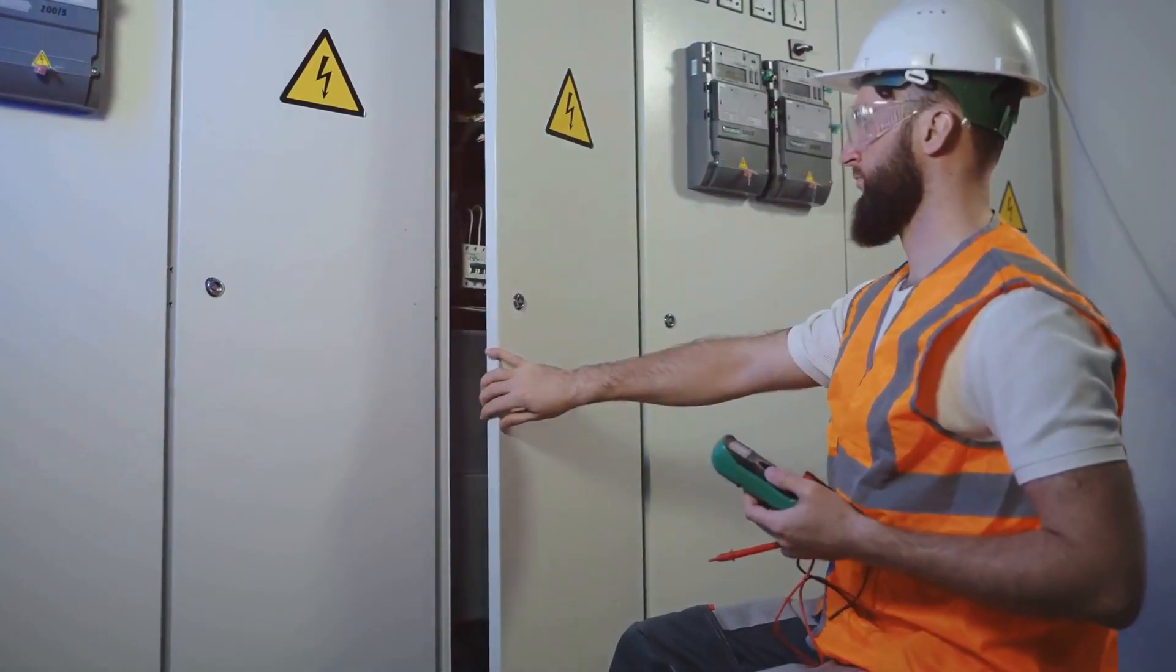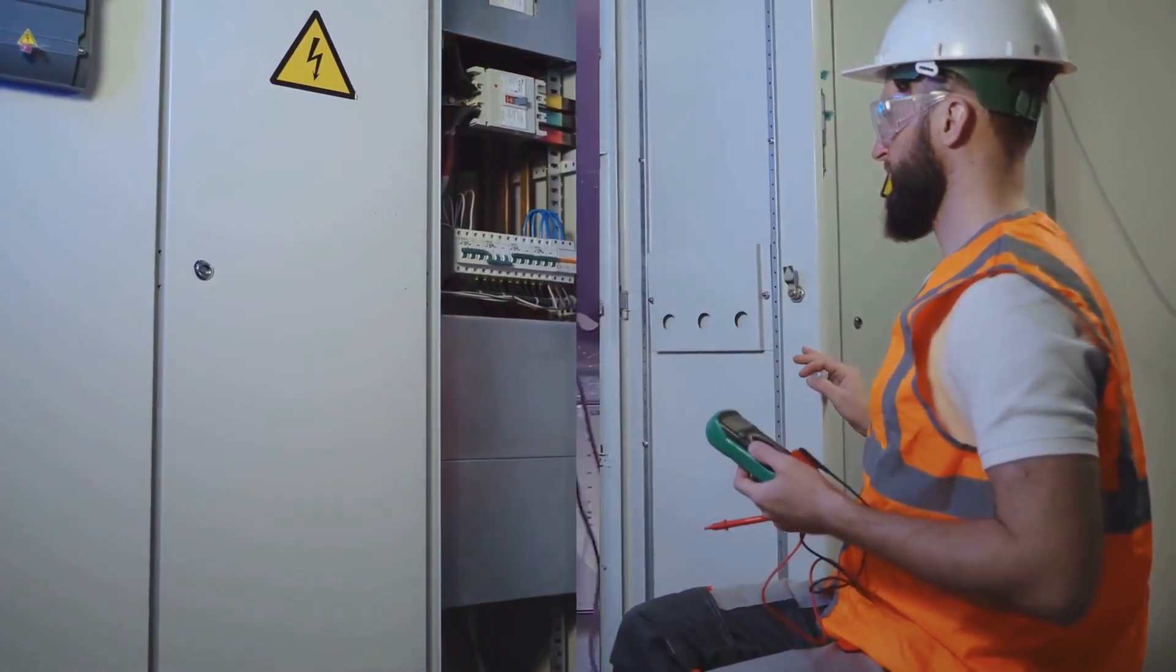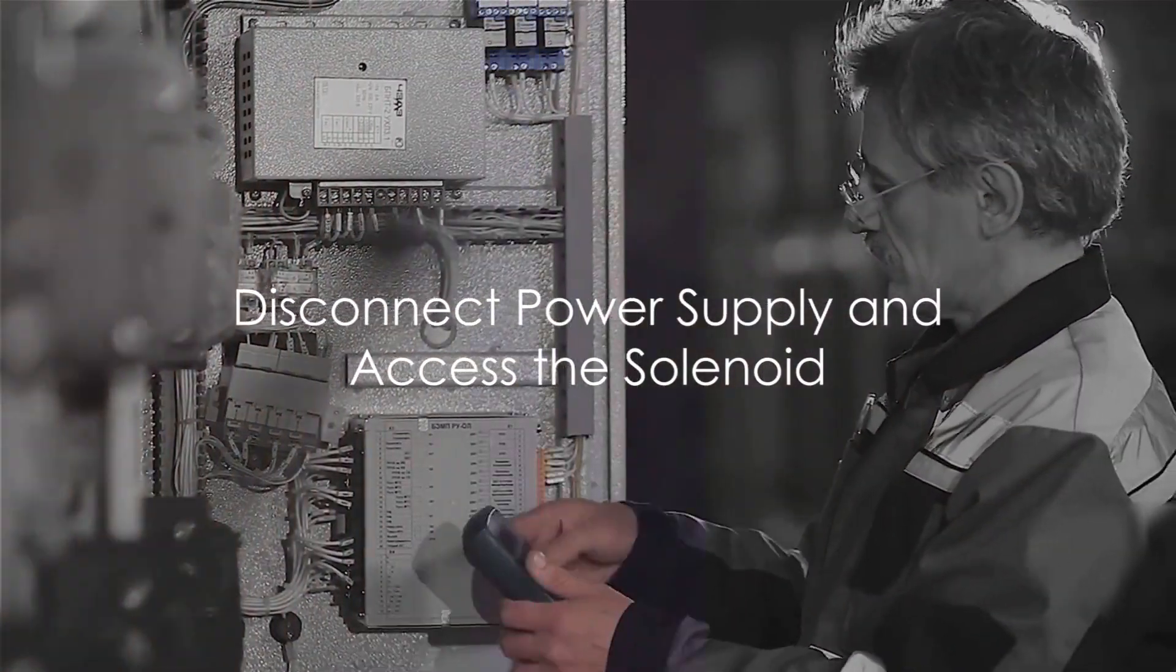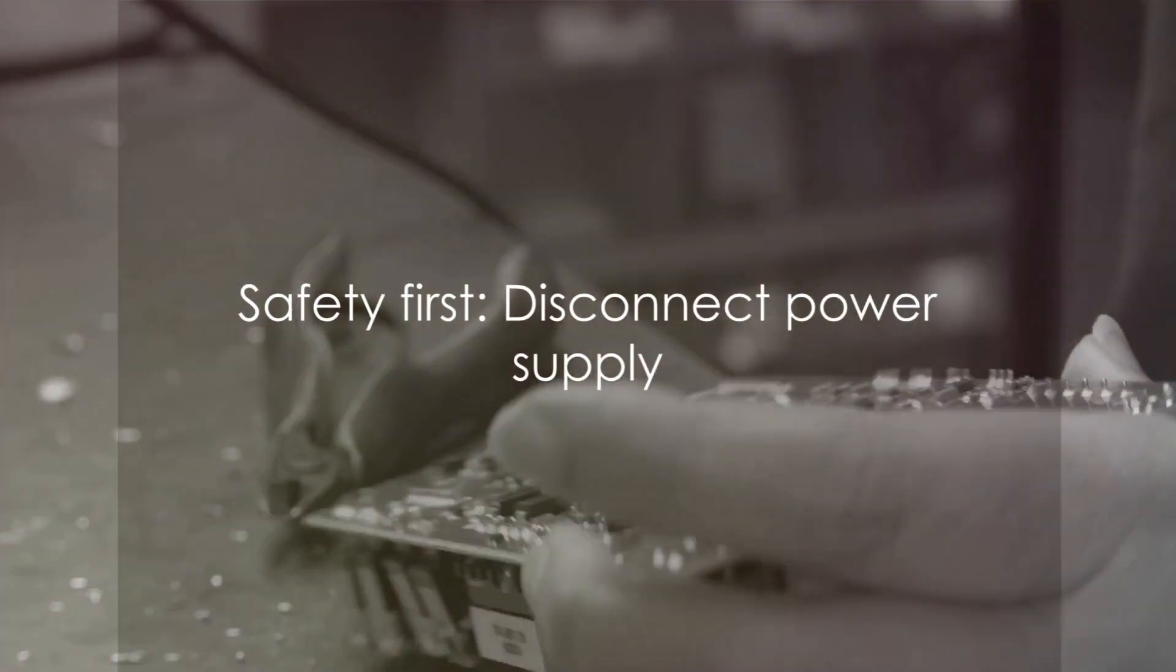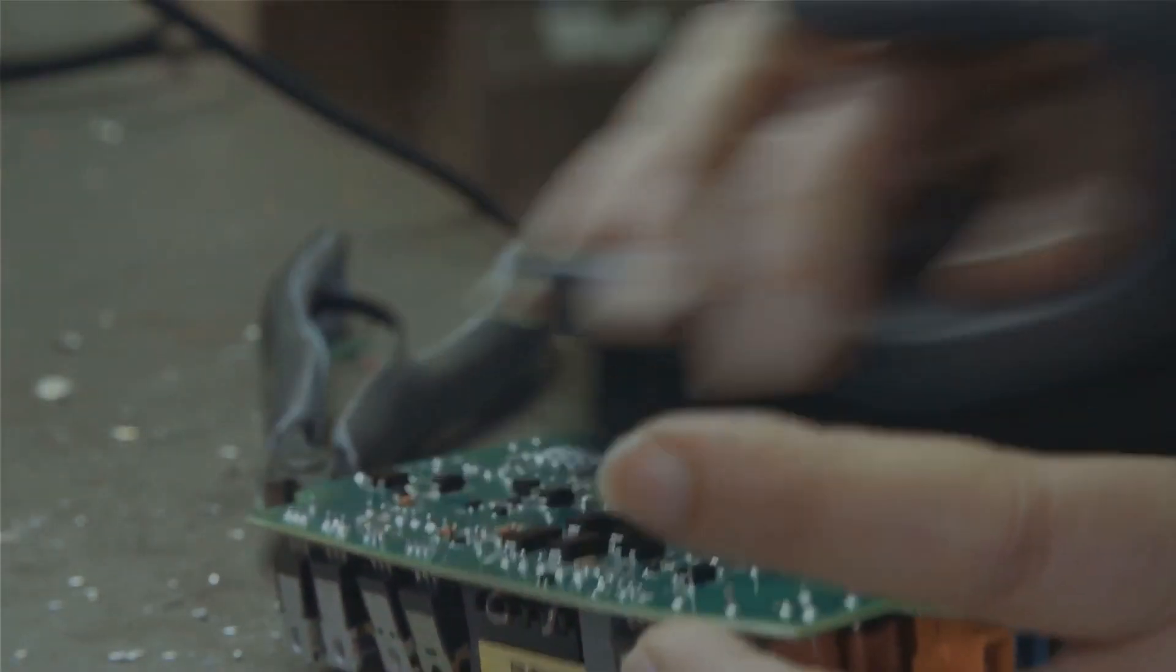With safety ensured, let's disconnect the power supply. If your solenoid is connected to a power source, make sure to disconnect it. It's not just a safety measure, but also prevents damage to your multimeter.